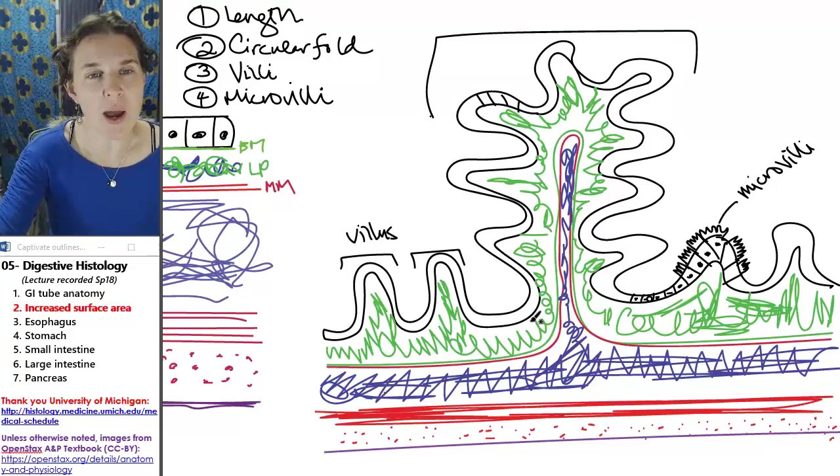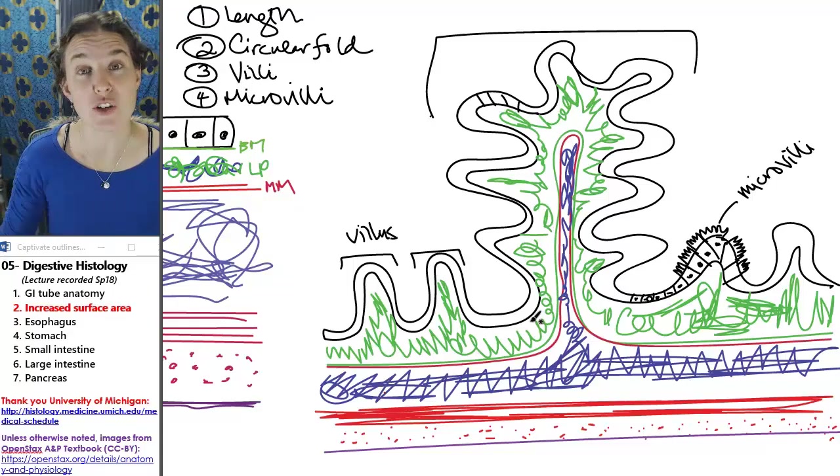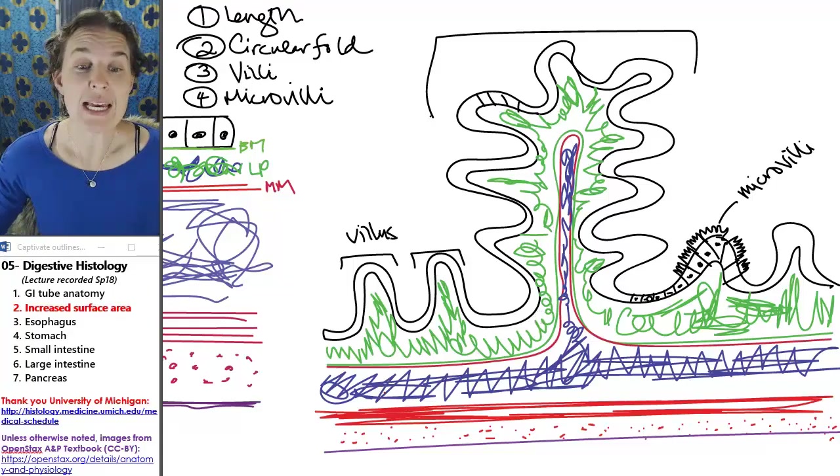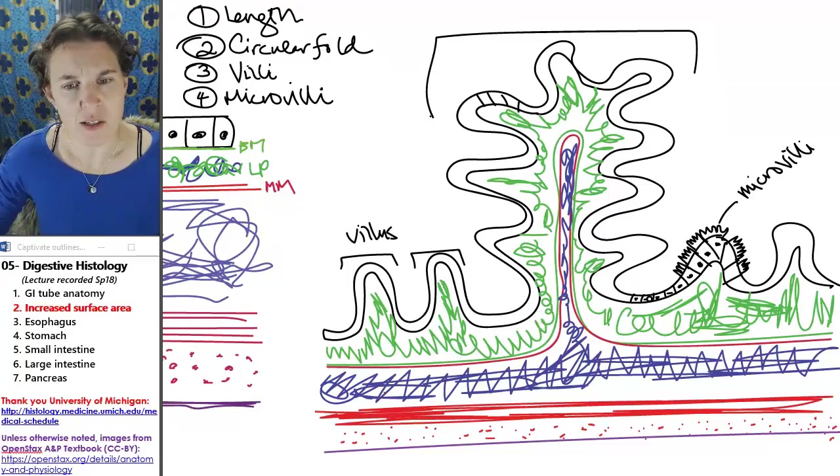You should be able to compare and contrast all those different ways of increasing surface area. And now that you have the generalized tube and how we can increase surface area, now we're going to look at each of the parts of the tube specifically. Sounds like fun. I'll be right back.